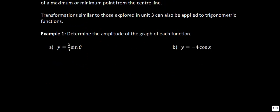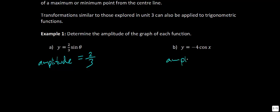Example 1: determine the amplitude of each function. For y = (2/3)sin x, you just look at the leading coefficient — the amplitude is 2/3. For y = −4 cos x, the a value is −4; we take the absolute value because amplitude is always positive, so the amplitude is 4. We're showing what different parts of the sinusoidal equation indicate.